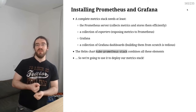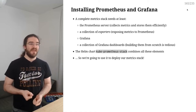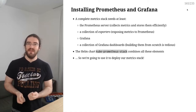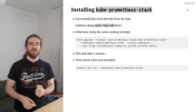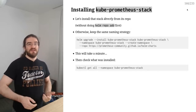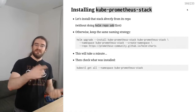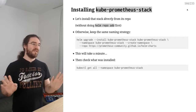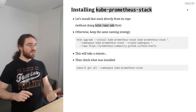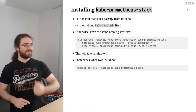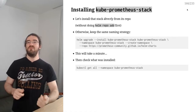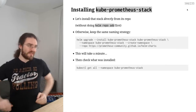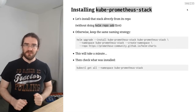We have a chart to do all of that for us. The chart I'm going to use is called kube-prometheus-stack and it will take care of installing everything. As always, I'm going to install it in its own namespace. Since it's called kube-prometheus-stack, I'm going to install it with a release called kube-prometheus-stack in a namespace called kube-prometheus-stack.